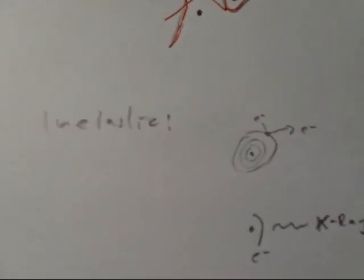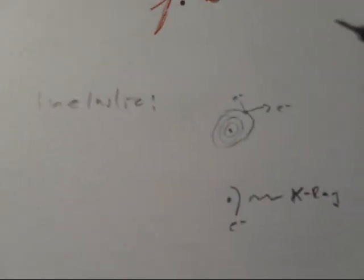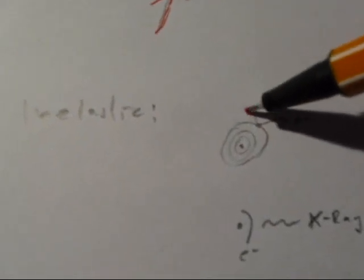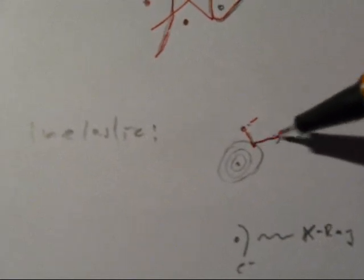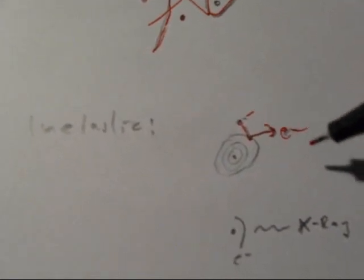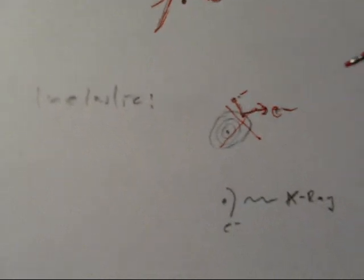And also, inelastic scattering may occur. That may be, for example, secondary electrons when the electron from our beam hits an electron in the outer shell, in the valence shell, and the electron gets knocked out. But this isn't important for analysis either.